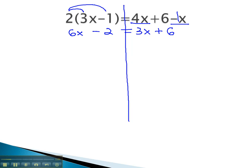Now that we have simplified, we must address the issue that the variable is still on both sides. To get the variable on one side, we'll move the smaller one, or the 3x, by subtracting 3x from both sides. This gives us 3x minus 2 equals, with the 3x's subtracting to 0, giving us 6.